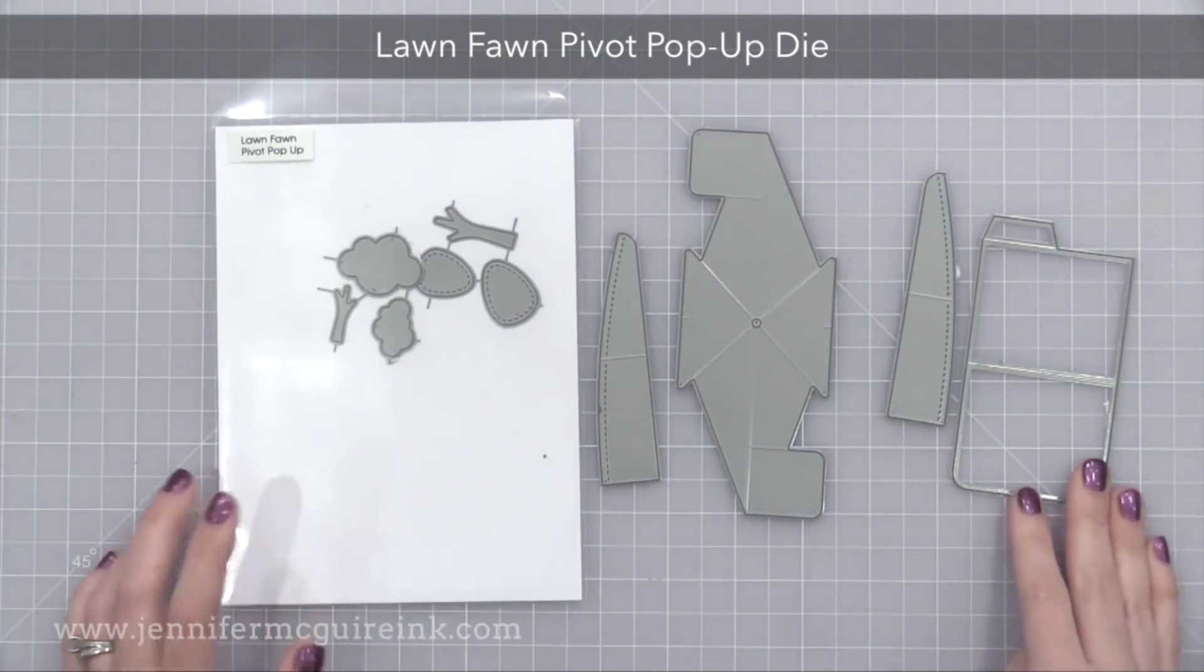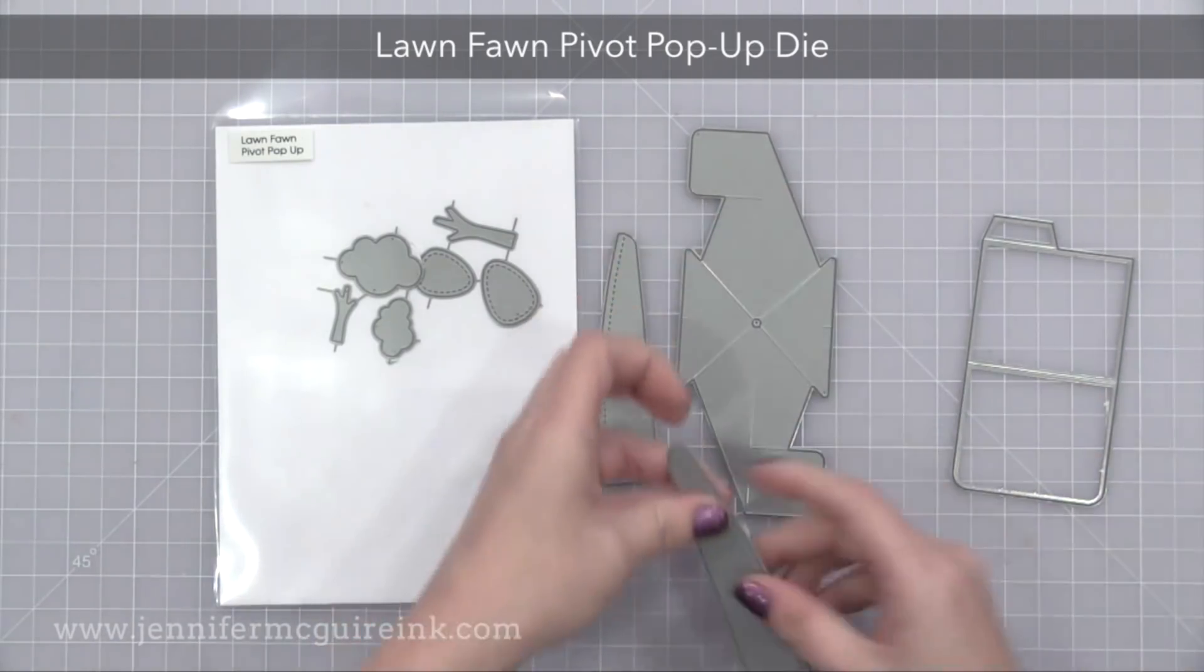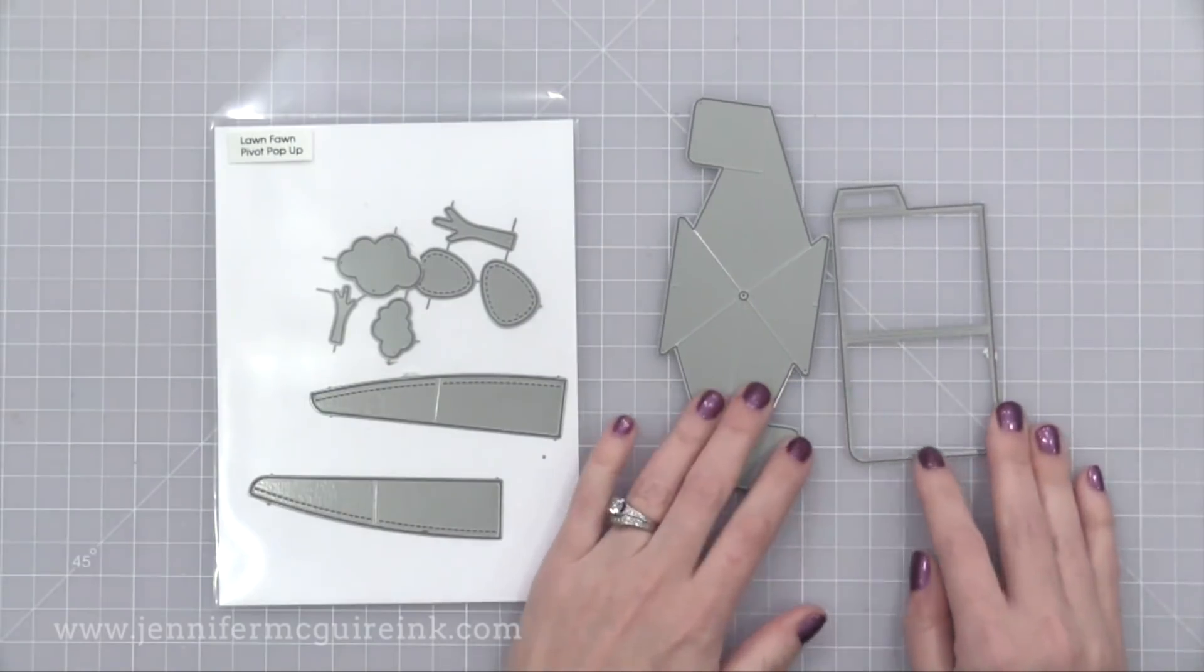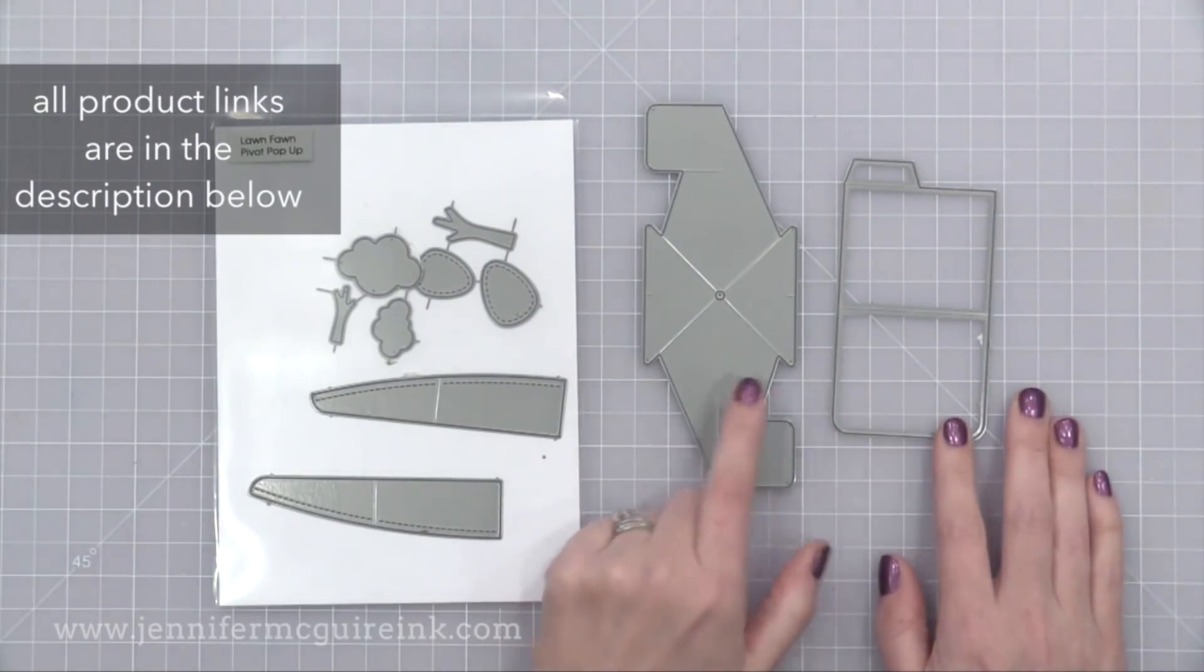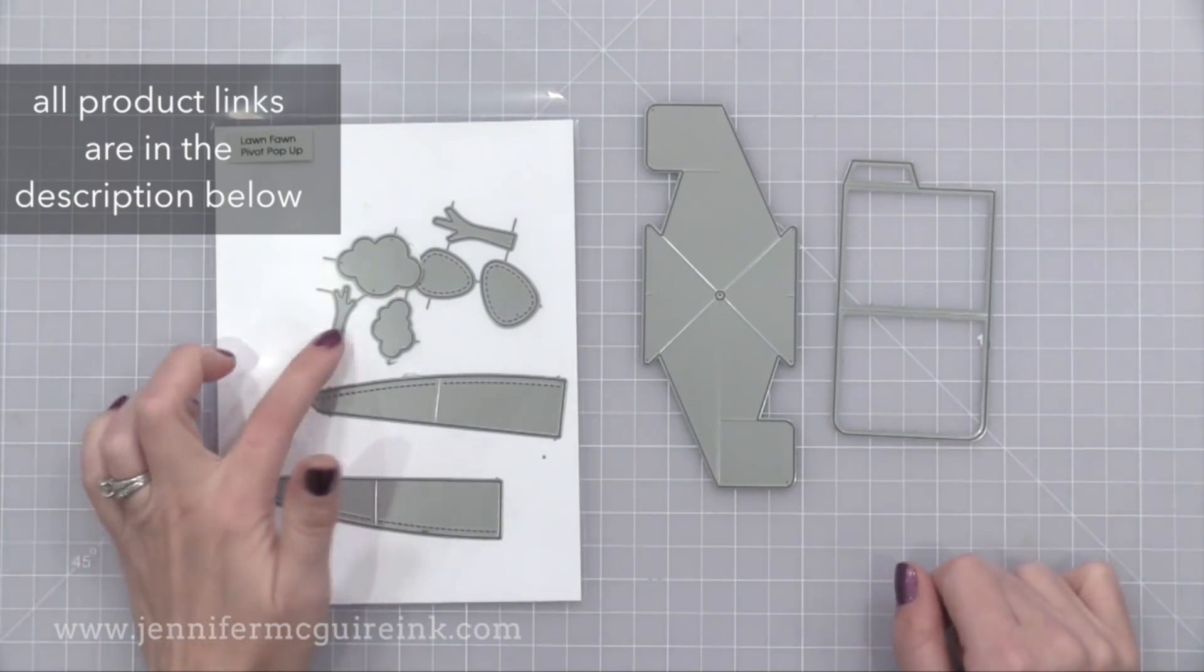This is the new Lawn Fawn pivot pop-up die set. There really aren't that many pieces to it. To make the pop-up happen, you need these two dies on the right, but they come with the other dies on the left, which can be used to decorate or create a scene along the pop-up piece.